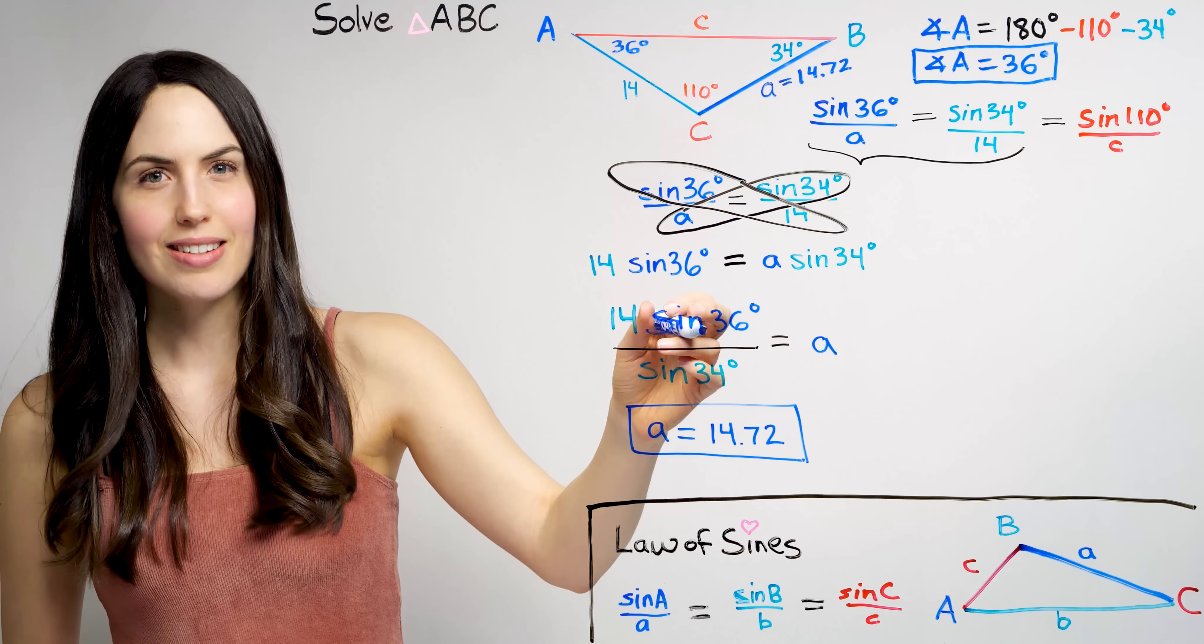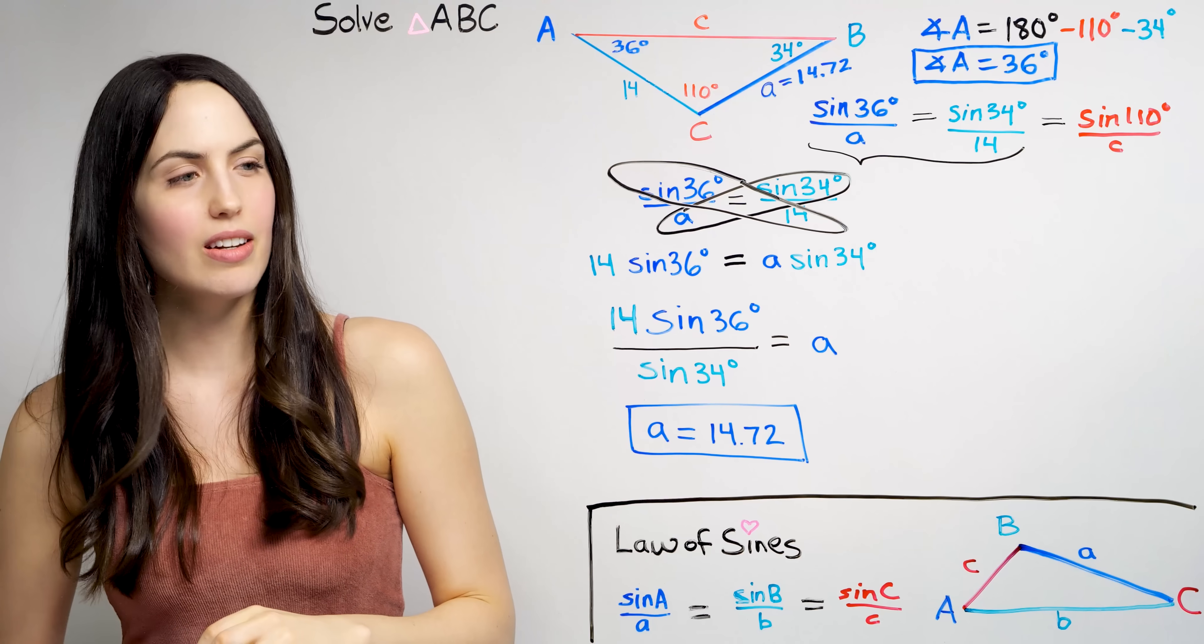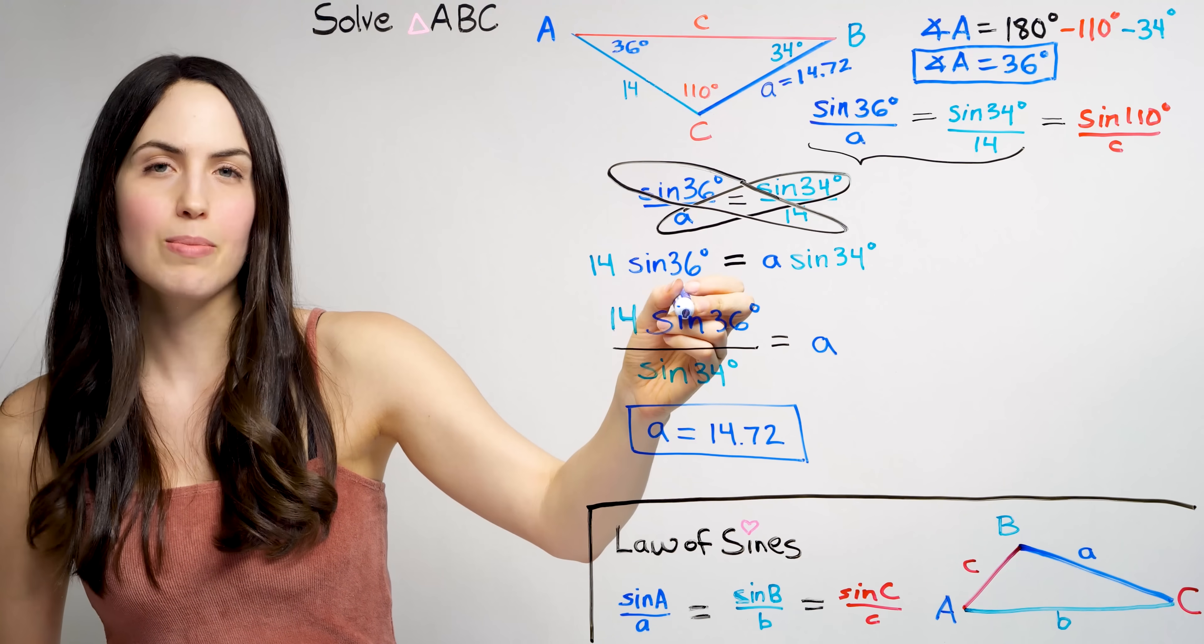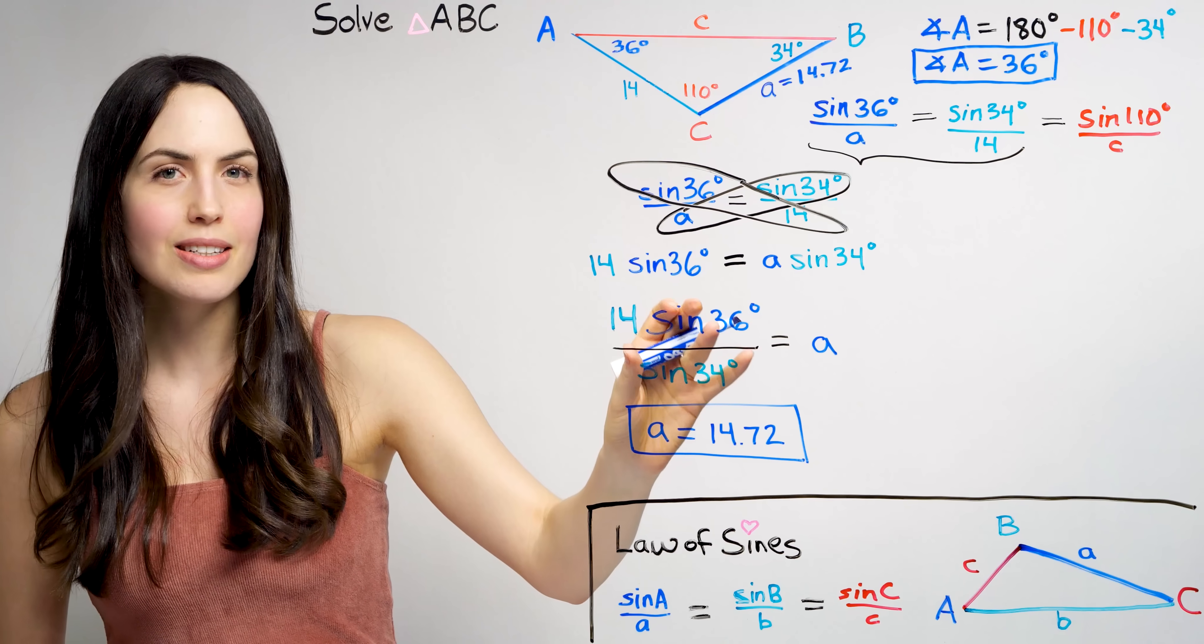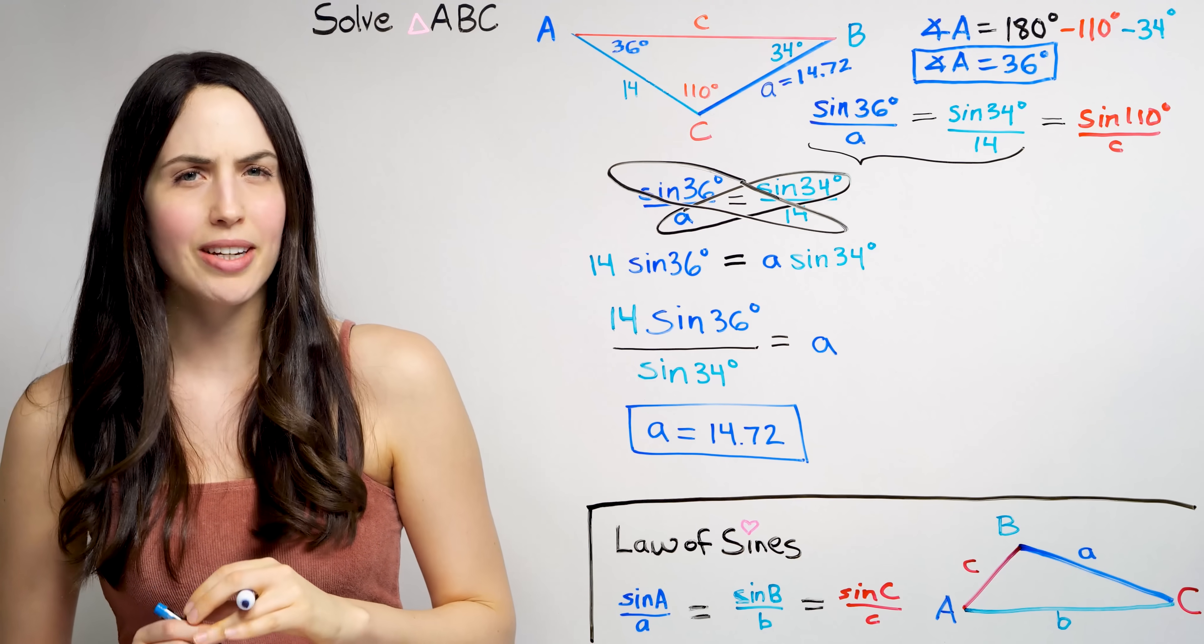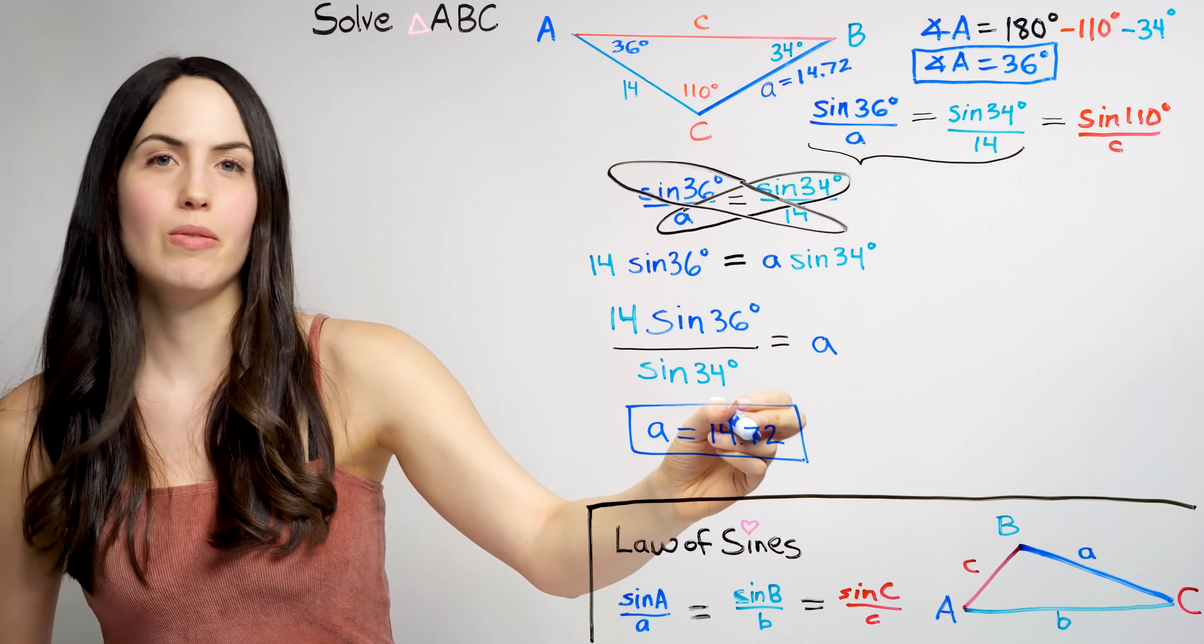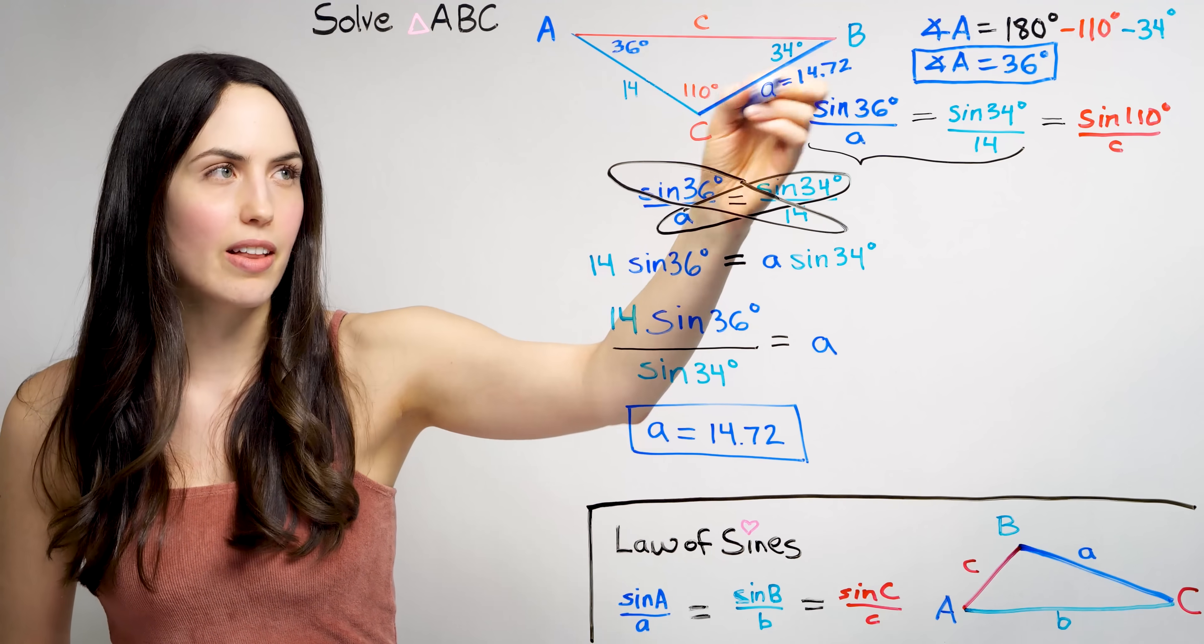This is a little bit wonky as a length, so you can plug this into a calculator and get a decimal number for that. Just punch in 14 times sine 36 degrees, in degree mode. Not in radian mode in your calculator, where you will get the wrong answer. Divided by sine 34 degrees, and we get that A is approximately 14.72 for that length.